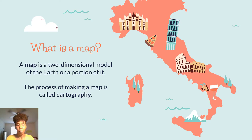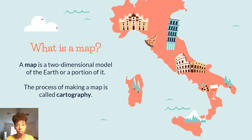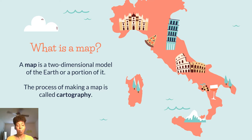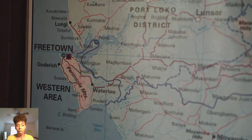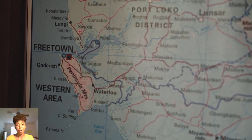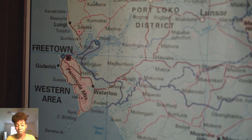So first, let's start with our first destination: what is a map? A map is a two-dimensional model of the earth, or a portion of it. We use maps all the time to navigate to certain places or to figure out where certain things are located on the earth. The process of map making is called cartography, and cartographers create and design maps.